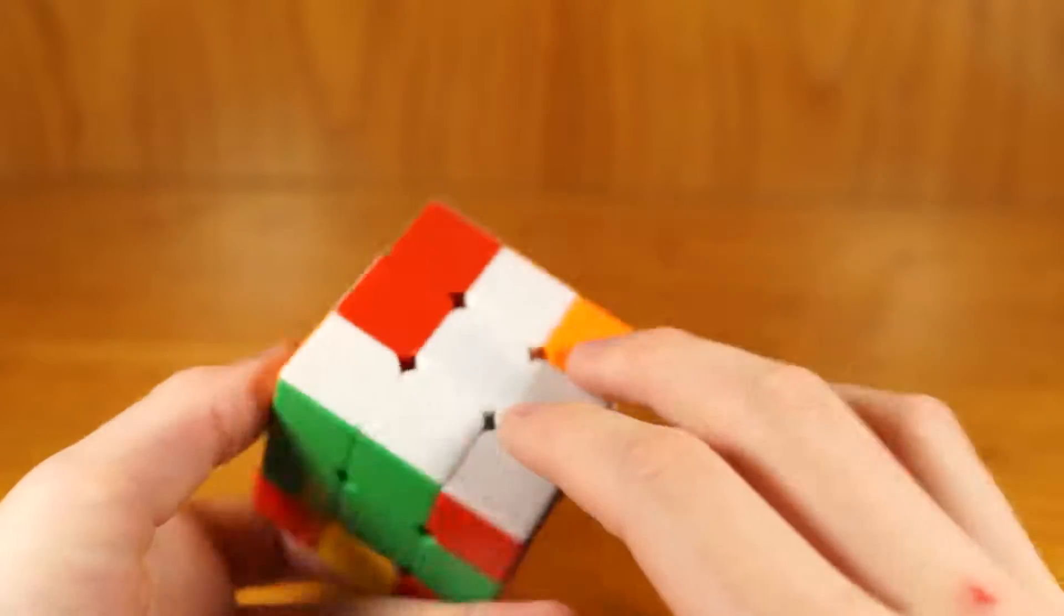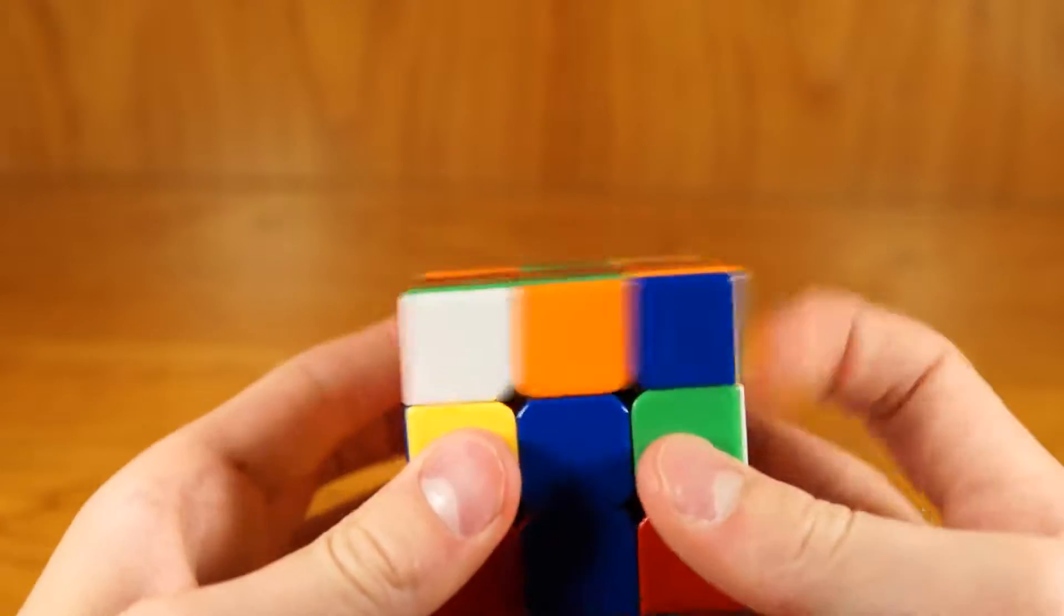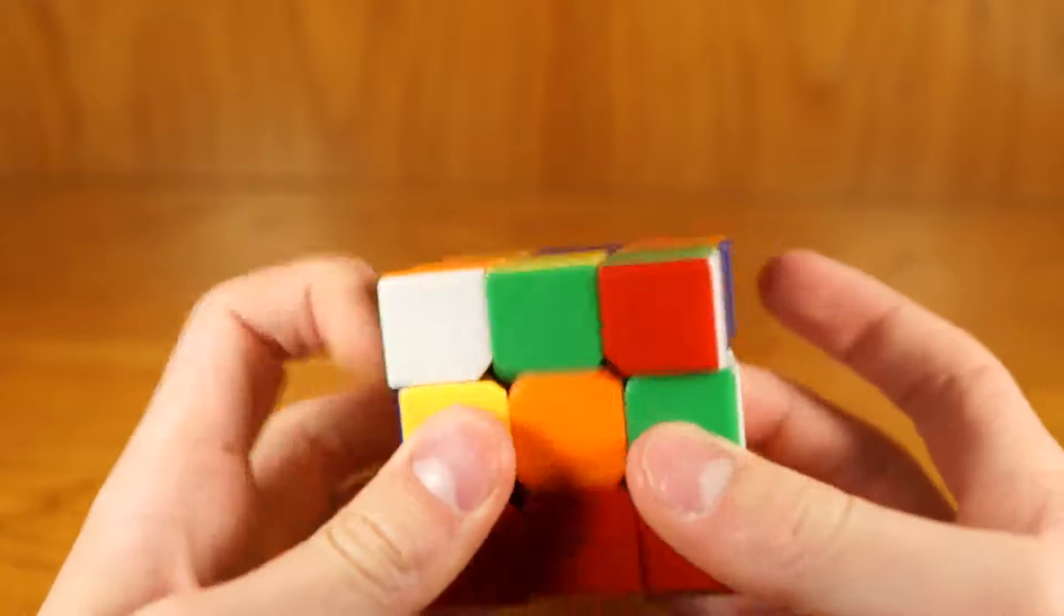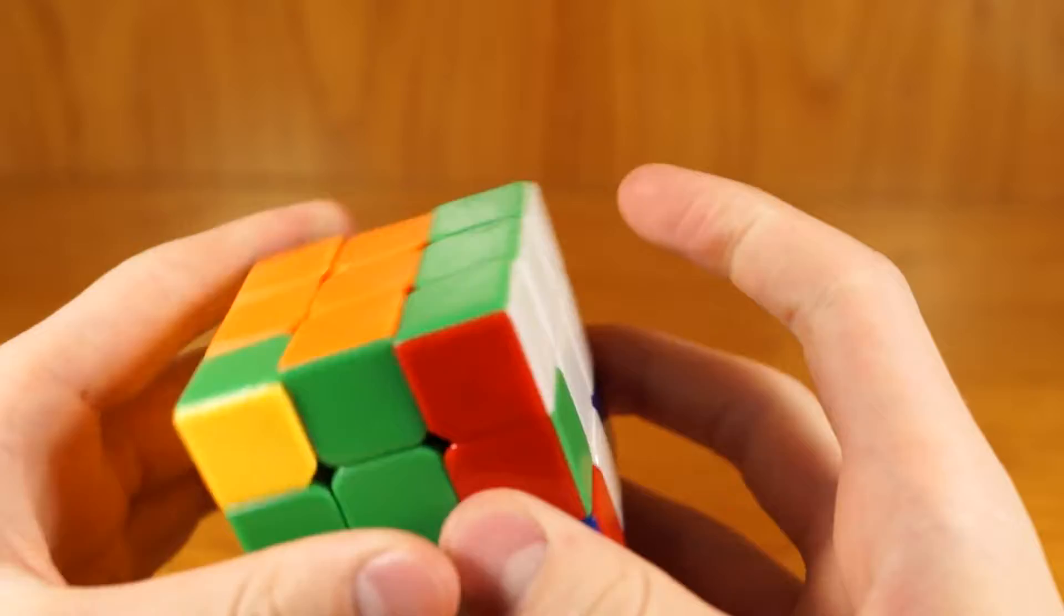Then you're going to get yellow and white on one side and then you're going to do a parity error. So you just do beginners parity algorithm, not parity algorithm, but corner flipping algorithm.